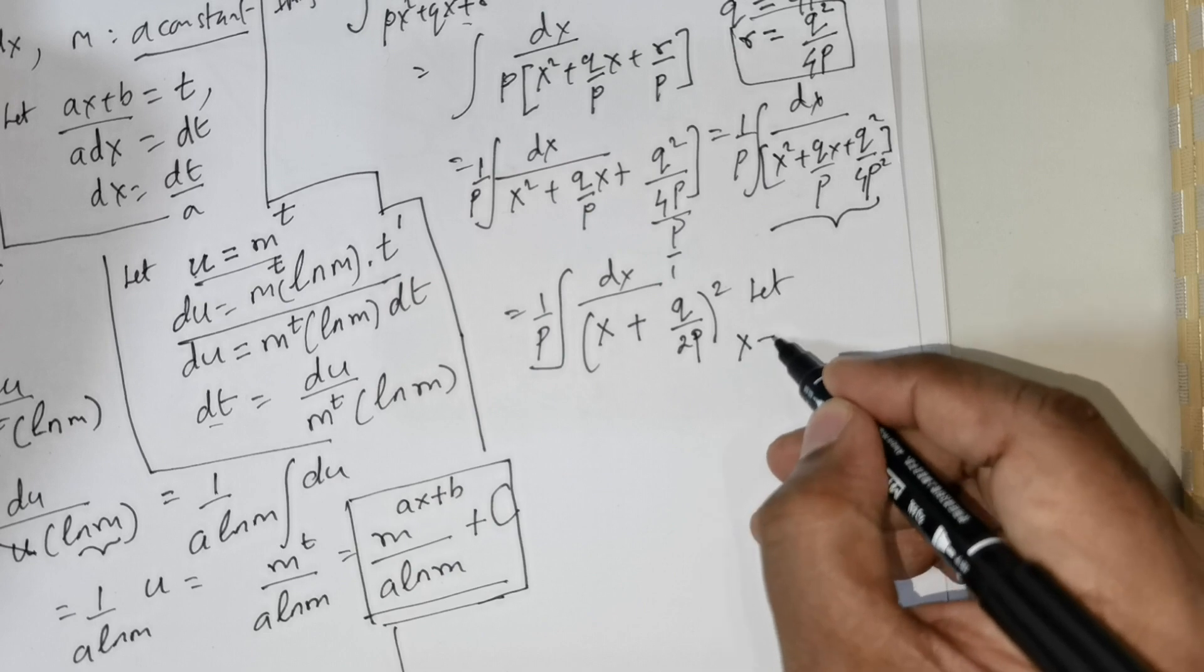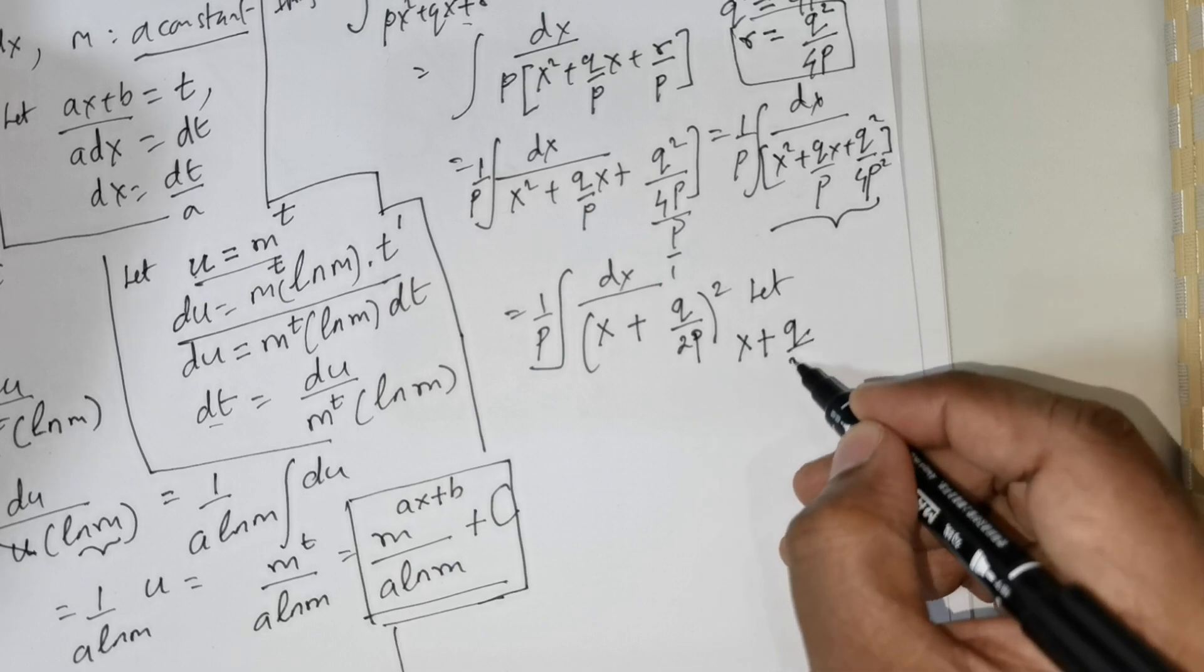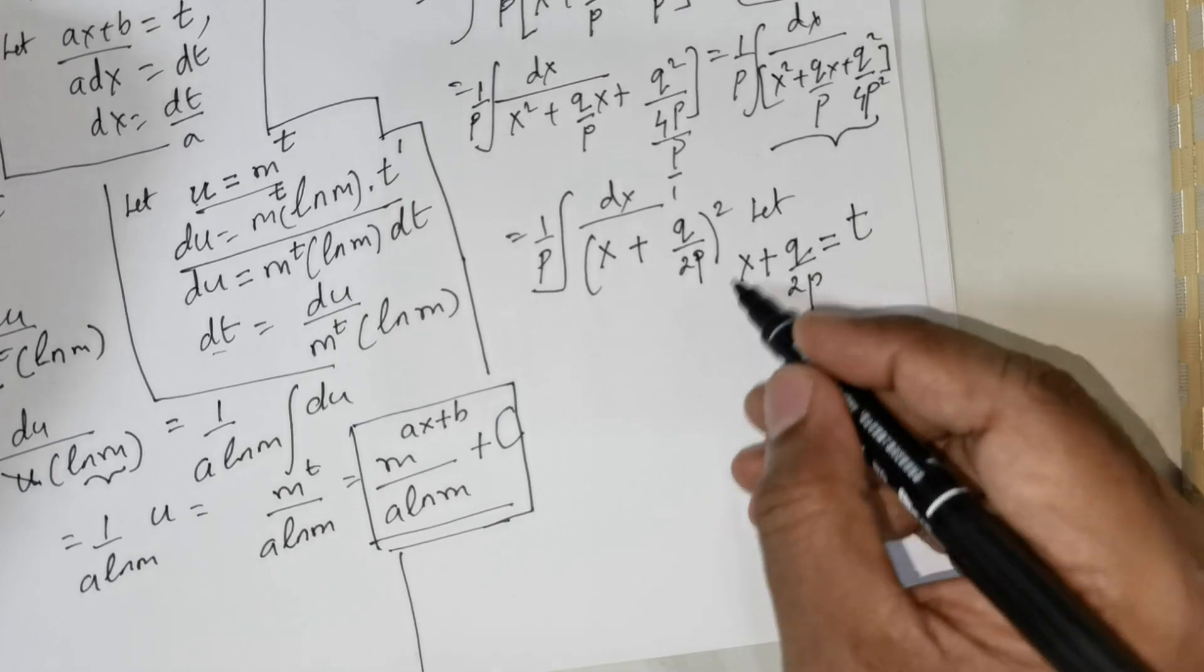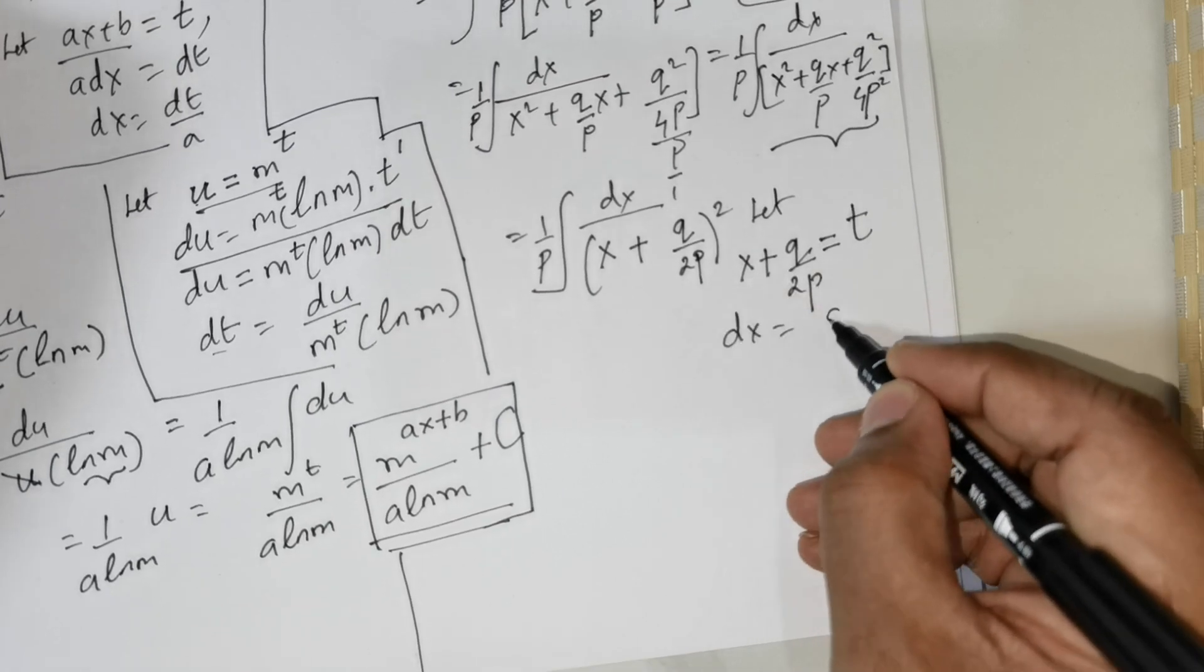We got that perfect square. Now let x plus q over 2 times p be equal to some t. So differentiate both sides. Only x is the variable, so I will get dx equals dt.